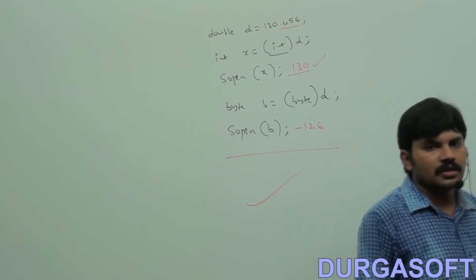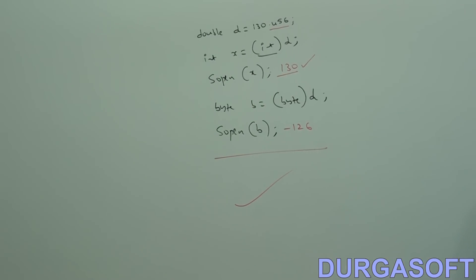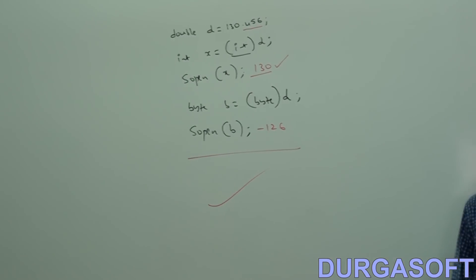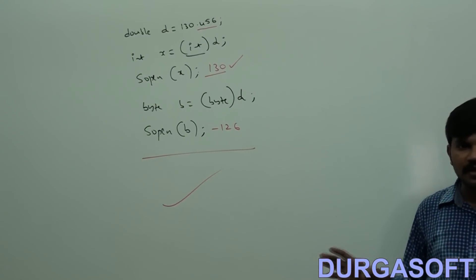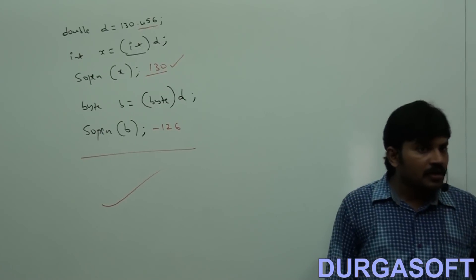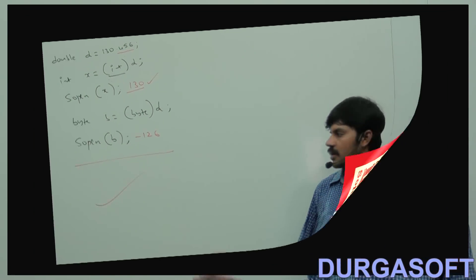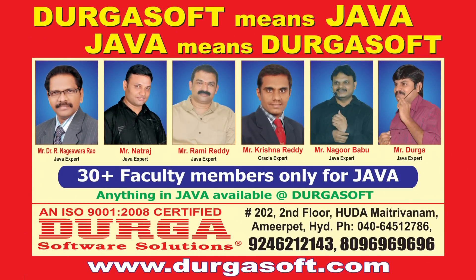So the simple conclusion: if we assign floating point data type values to integral types by explicit type casting, the digits after the decimal point will by default be gone. This covers the type cast operator — there are 2 types of type casting: implicit and explicit. Implicit type casting is performed internally, but explicit type casting is performed explicitly by the programmer.